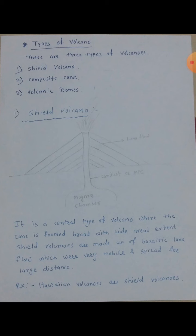Central type of volcano manje kai? Khi ji magma chamber connected pipe aste, aani tii surface parant tah pose le la aste — straight. Magma chamber paasun connect zhali la ji pipe ahe, tii surface parant jaate, aani tachya tuhun jekahi material baahir pad lela aste. Fissure type of eruption manje — jai magma chamber chya baazula jokai country rock aste, jokai hard rock aste, tia hard rock madhe mothe chira aste. Tia chiraan madhun jekahi material surface var yeto aani flow hoto. Magma tia chiraan madhun baahir yeto, aani toh surface var aala ki to lava banto. Aani toh lava spread hoto — tala apan fissure type of eruption maantho.